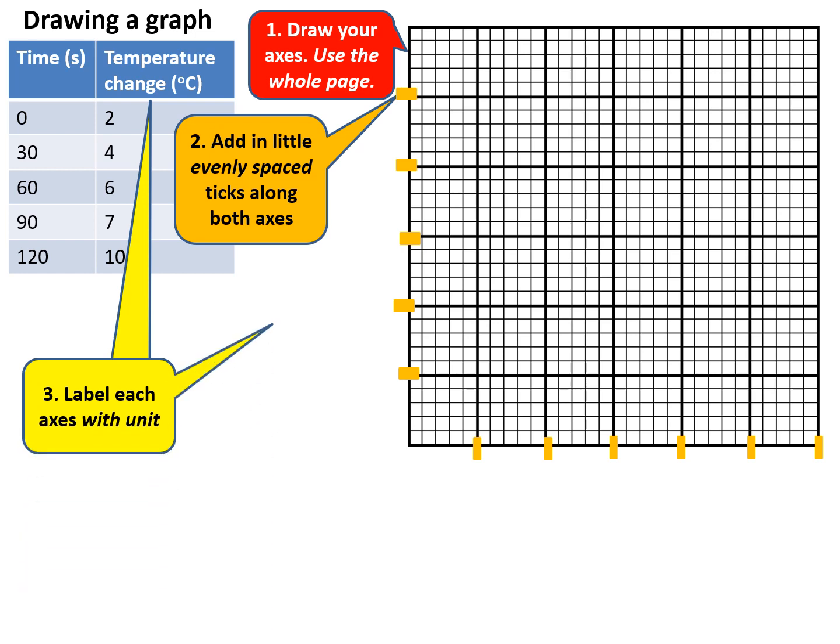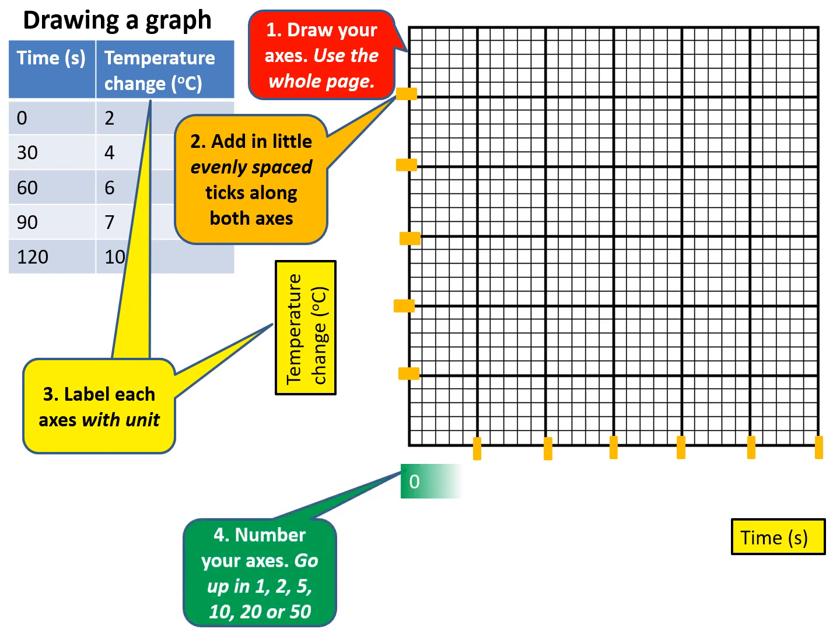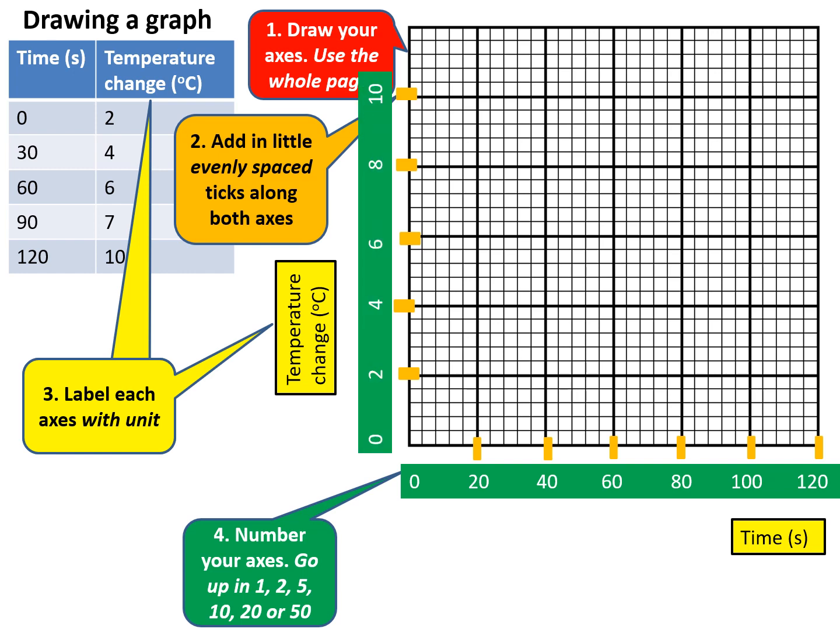Temperature change is your dependent variable on the y-axis, and time is your independent variable on the x-axis. Before plotting, find a good scale. Since time ranges from 0 to 120, create an evenly distributed scale from 0 to 120. Temperature ranges from 2 to 10, so do the same. Then start plotting your data.